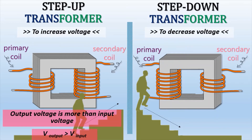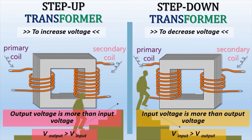A Step-Down Transformer converts a high primary voltage into a low voltage. With this type of Transformer, the number of turns in the primary coil is greater than the number of turns in the secondary coil. If V input is greater than V output, the voltage level is lowered on the output side and it is known as a Step-Down Transformer.